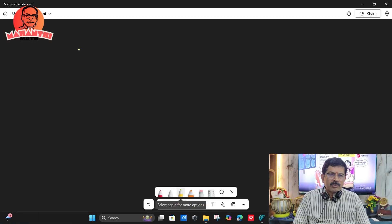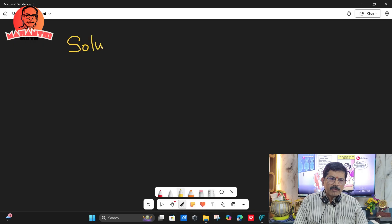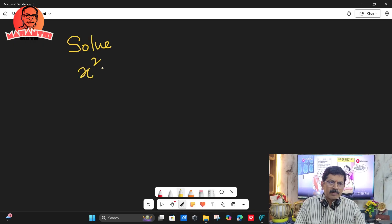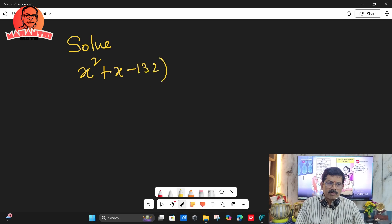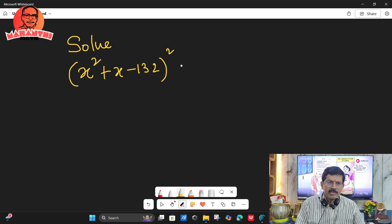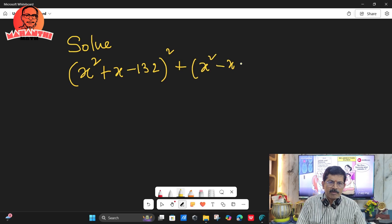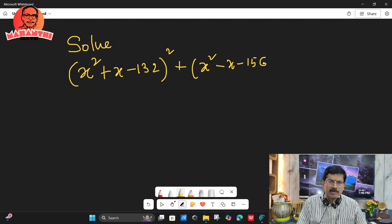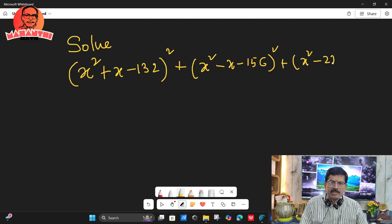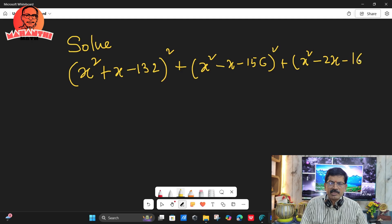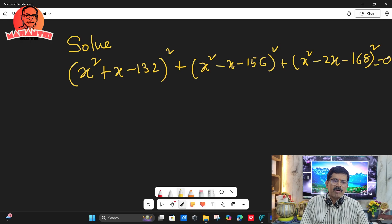You see, suppose one equation. Solve (x² + x - 132)² + (x² - x - 156)² + (x² - 2x - 168)² = 0. This one we have to solve.